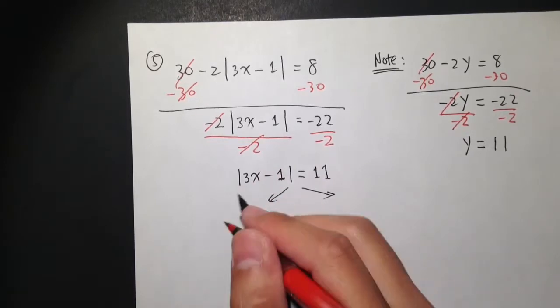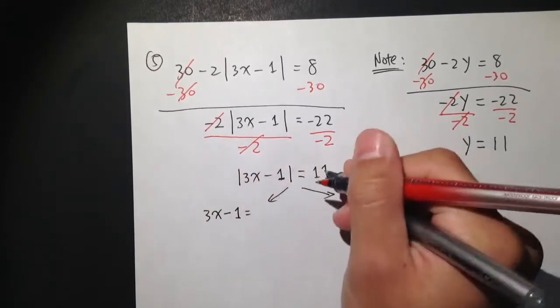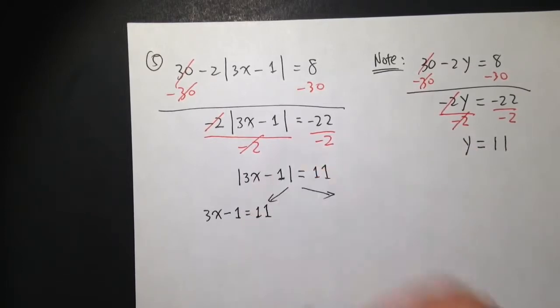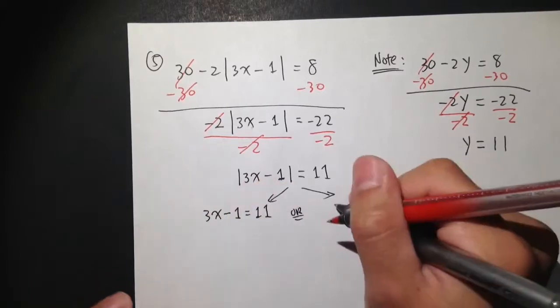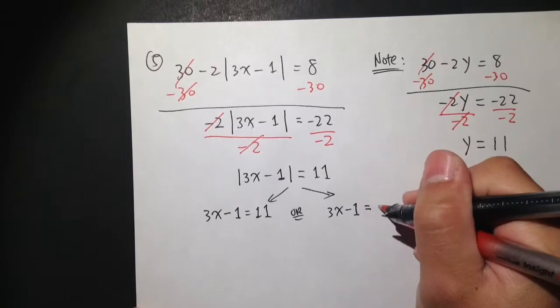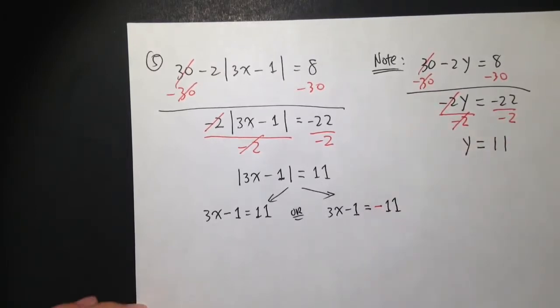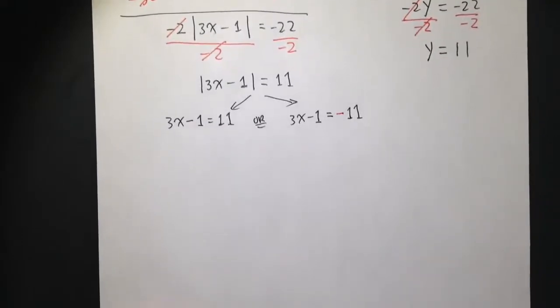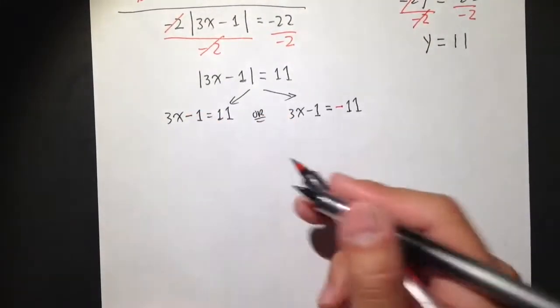The first one, you keep inside the same: 3x minus 1 is equal to 11. Or the second case is, you keep inside the same, 3x minus 1, but then here you are going to make this equal to negative 11. And now we have two normal equations. We can solve this in a normal way.